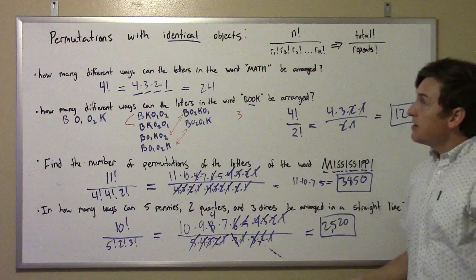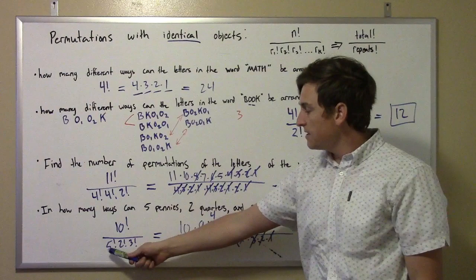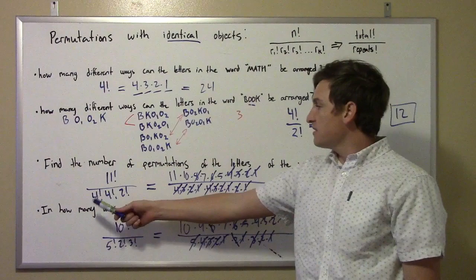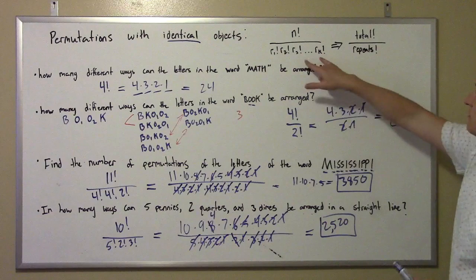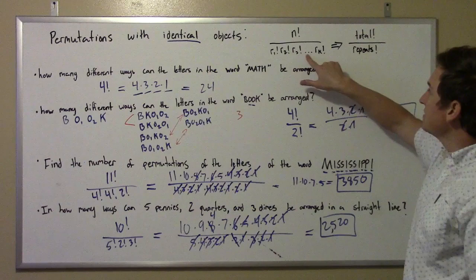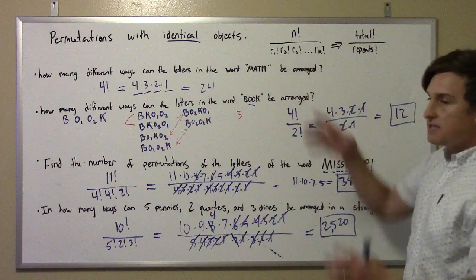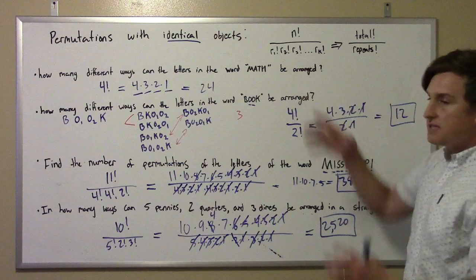So that's how you do permutations with identical objects. You take the total number of objects and divide by the factorial of each repeated group. So 10 coins but 5 pennies, 2 quarters, 3 dimes; or 11 letters but 4 I's, 4 S's, and 2 P's. The formula from the book is saying the same thing: n factorial on top, and all the different repeated object counts as factorials on the bottom. You may have one repeated object or several — those represent all the different repeats you could potentially have. And that's how you do permutations with identical objects.